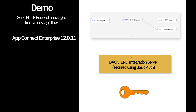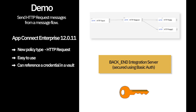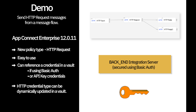In ACE version 12.0.11, a new policy type has been provided called HTTP request, and this can be used with the HTTP request node. This is easier to use than the security profile, and the policy can be used to reference a credential in a vault if you're using basic auth or API key credentials. The HTTP credential type can be dynamically updated in a vault and the new credential is used by the message flow without needing a restart of the flow or the integration server.